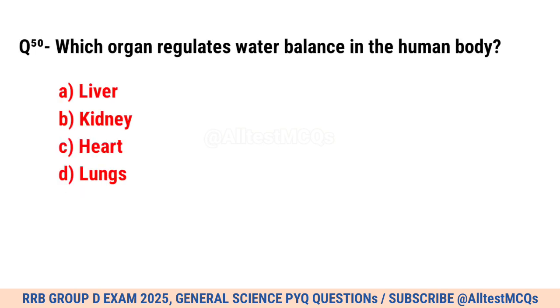Question No. 50. Which organ regulates water balance in the human body? Correct option is B. Kidney.